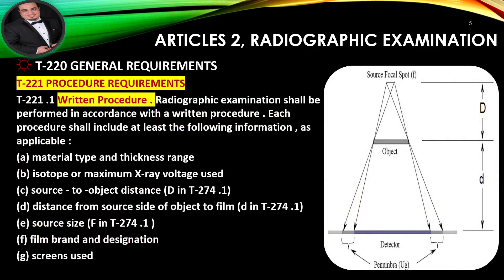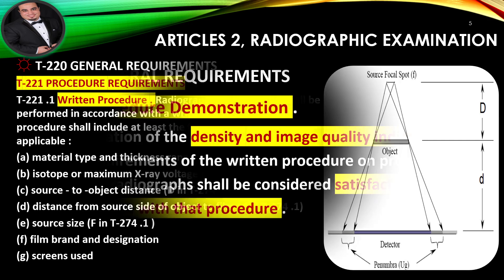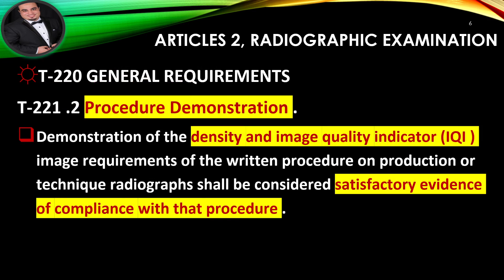Procedure Requirements — Written Procedure: Radiographic examination shall be performed in accordance with a written procedure. Each procedure shall include at least the following information, as applicable: material type and thickness range; isotope or maximum X-ray voltage used; source-to-object distance; distance from source side of object to film; source size; film brand and designation; screens used. Demonstration of the density and image quality indicator (IQI) image requirements of the written procedure on production or technique radiographs shall be considered satisfactory evidence of compliance with that procedure.